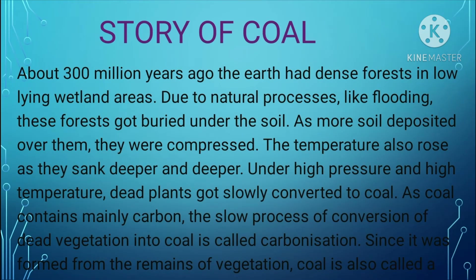The story of coal's formation is very interesting. About 300 million years ago, the earth had dense forests in low-lying wet areas. Due to natural processes like flooding, these forests got buried under soil. As more soil deposited over them, they were compressed and the temperature also rose as they sank deeper and deeper. Under high pressure and high temperature, dead plants were slowly converted to coal. Coal contains a lot of carbon. The slow process of conversion of vegetation into coal is called carbonization.